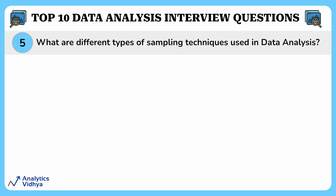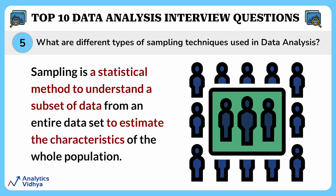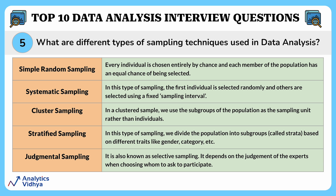Our next question is: what are the different types of sampling techniques? Sampling is a statistical method to select a subset of data from an entire dataset to estimate the characteristics of the whole population — you take a part of the data and analyze only that part, then derive conclusions for the entire dataset based on the results. The different types of sampling techniques include simple random sampling, systematic sampling, cluster sampling, stratified sampling, and judgmental sampling. You can read about these and take a screenshot for later reference.